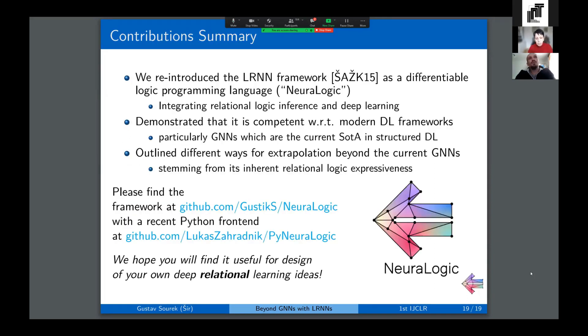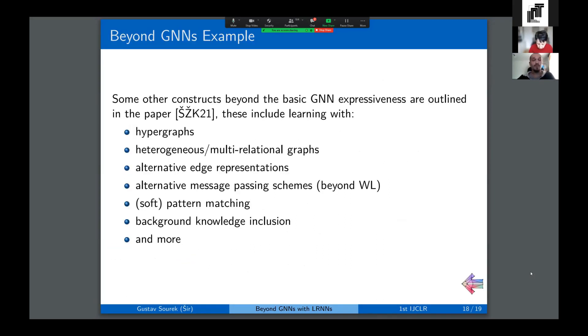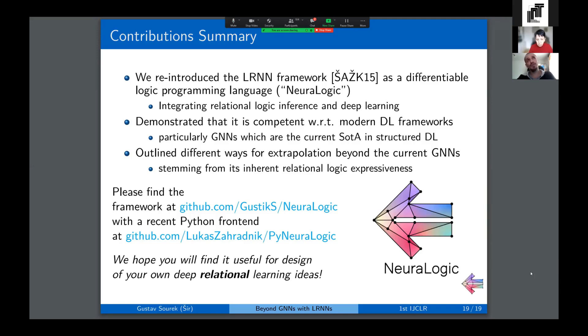So with that I will conclude. You can find these ideas in the paper. What we did here is we reintroduced the old LRNN framework from 2015 as a differentiable programming language following the declarative logic programming paradigm and integrating relational logic inference and deep learning as a proper special case. With these advanced neural architectures, we demonstrated it as somewhat competent with respect to modern deep learning frameworks, particularly in this graph neural network domain, which are super popular state-of-the-art models now in deep learning to tackle structured data. And then finally, most importantly, we outline different ways how to extrapolate, mostly in terms of expressiveness, beyond the current graph neural network models, and how you can use the framework to do just that.